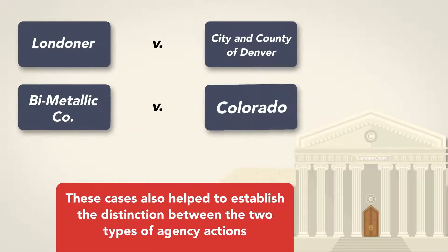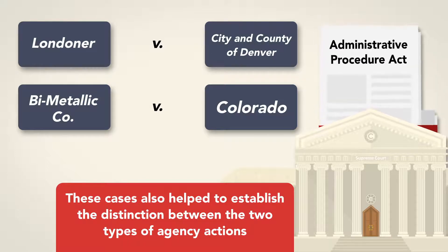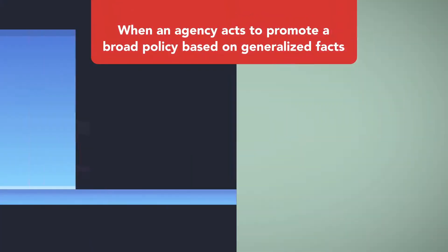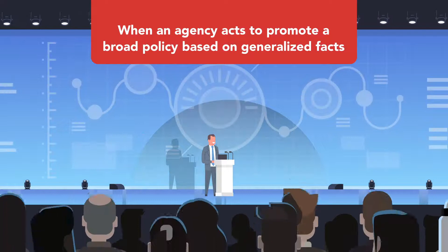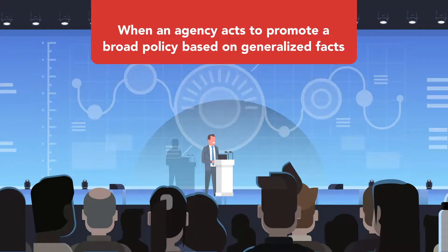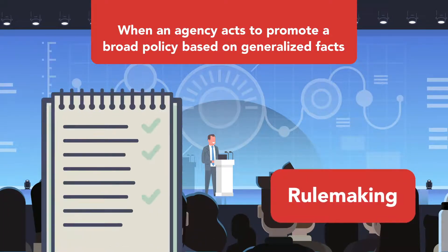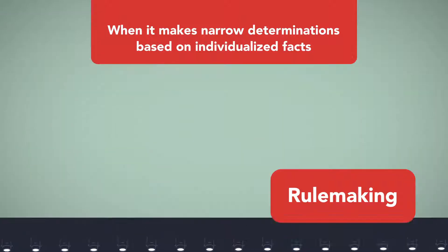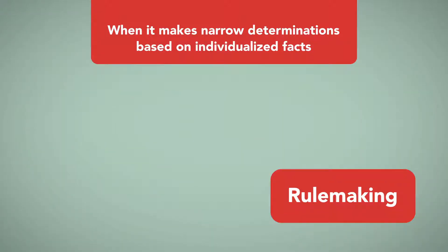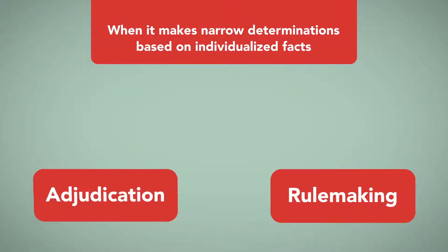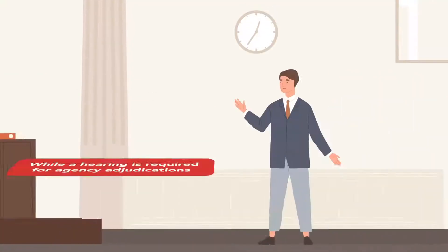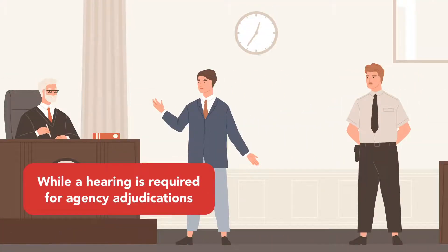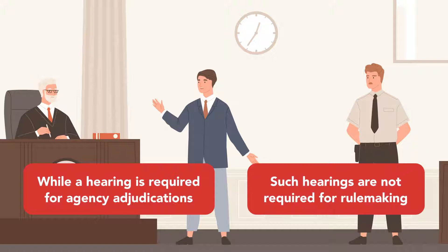These cases also helped to establish the distinction between the two types of agency actions, which were later codified in the APA. When the agency acts to promote a broad policy based on generalized facts, it is engaging in rulemaking, whereas when it makes narrow determinations based on individualized facts, it is engaged in adjudication. One important difference is that while a hearing is required for agency adjudications, such hearings are not required for rulemaking.